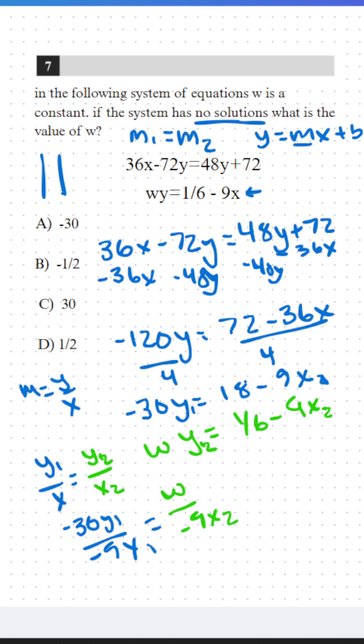So since we know that they're equal to each other, we know that w is going to have to equal negative 30. Comment below if you figured it out.